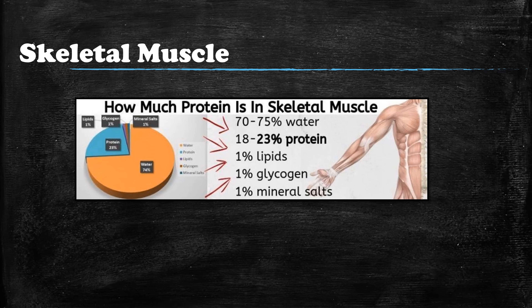If you look at the diagram on the screen, you will see that your muscle tissue is 70 to 75 percent water. Now when most people learn this they're very surprised, because they're under the assumption that your muscle tissue is primarily protein — but protein is only 18 to 23 percent, followed by lipids, glycogen, and mineral salts.